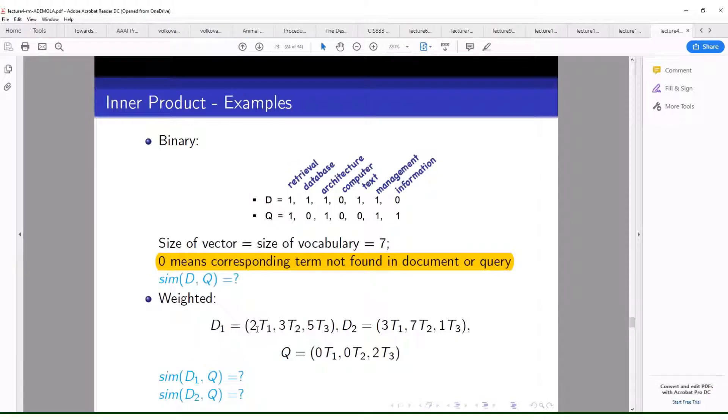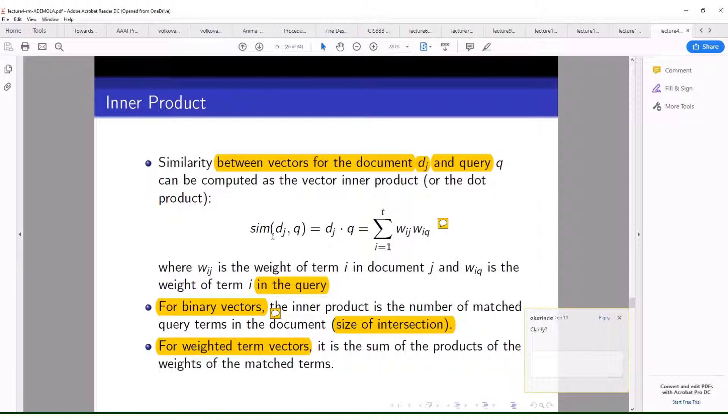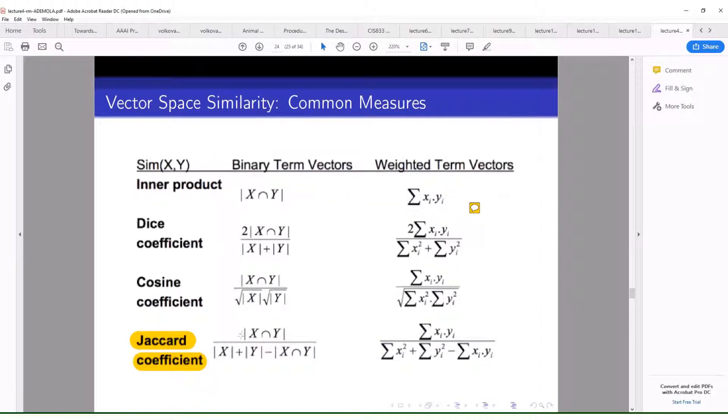So here it will be the D and the Q. So you get the intersection of those two sets and the length of it.